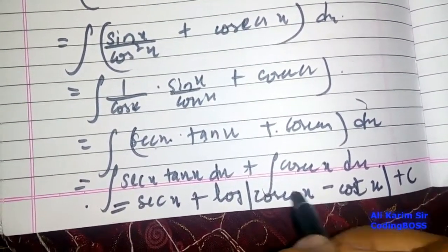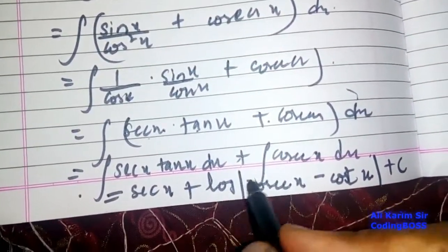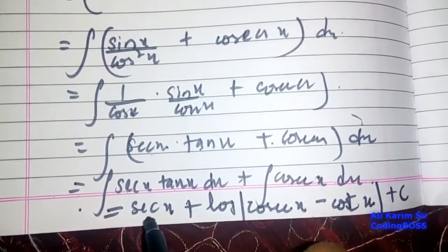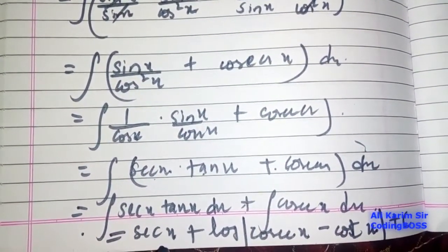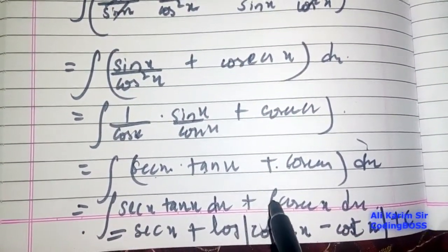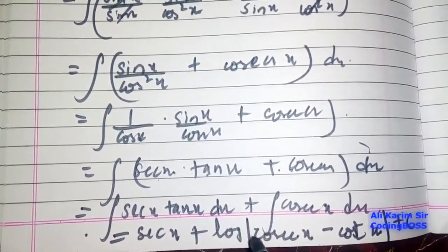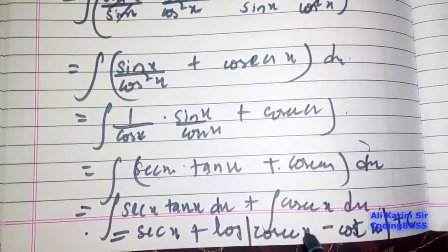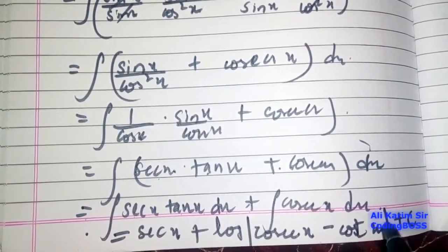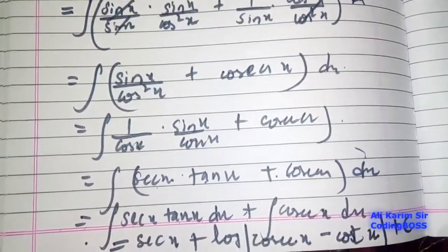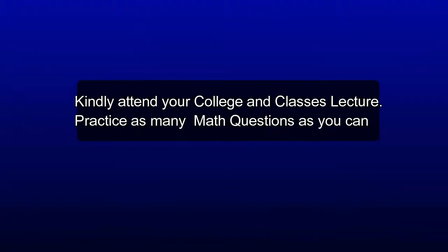So the final answer is: sec x plus log of csc x minus cot x plus C. To confirm: integration of sec x tan x is sec x, and integration of csc x is log of csc x minus cot x plus C.